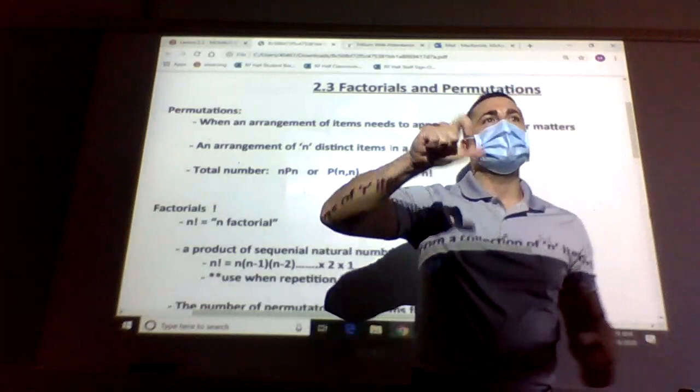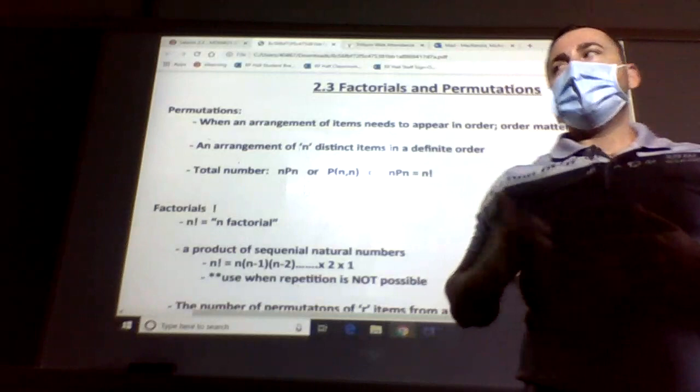...was on your locker when you have the three digit code. You want to make sure that the numbers were in a certain order, the only way that locker will open. Okay, so that's actually called a permutation.